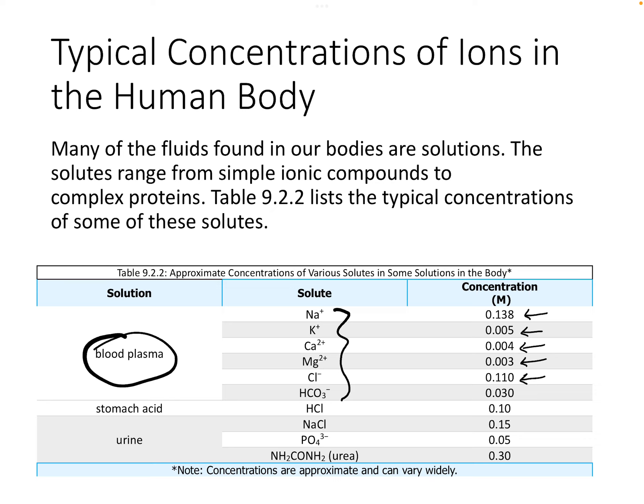For example, sodium ions are present at about 0.138 moles per liter, while magnesium ions are at 0.003 moles per liter. Stomach acid is hydrochloric acid, and its concentration is about 0.1 moles per liter.